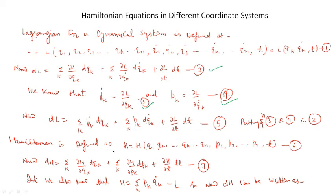Now you know that the Hamiltonian of a dynamical system is defined as H equal to H(q1, q2, ... qn, p1, p2, ... pn, t). Let us say it is equation number 6. Here q1, q2 are the generalized coordinates, p1, p2 are the generalized momenta, and t is time.